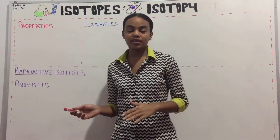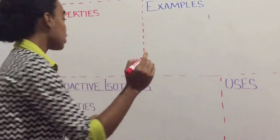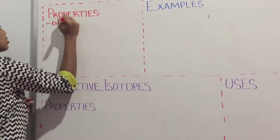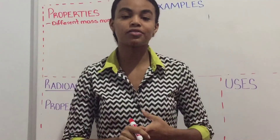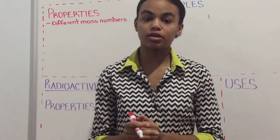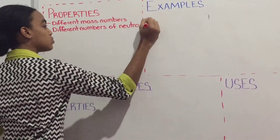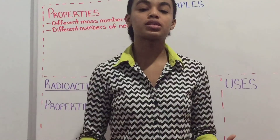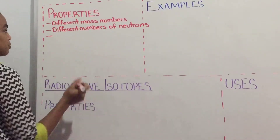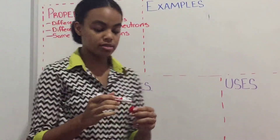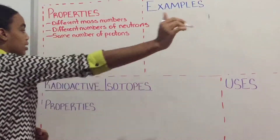Let's look at some properties of isotopes. The first property is that they have different mass numbers, and this difference is as a result of an increase or decrease in the number of neutrons in their nucleus. So isotopes also have different numbers of neutrons. Neutrons are the only subatomic particles affecting these isotopes. The number of protons remains the same, which means their atomic number also remains the same — same number of protons, same atomic number, and the same number of electrons.